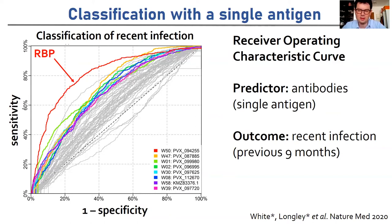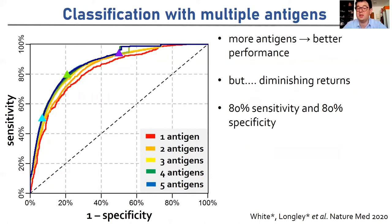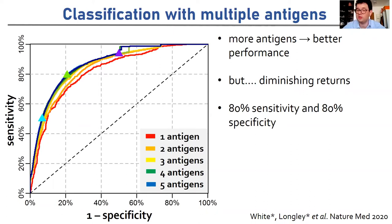The next question is: can we combine the signal from multiple antigens together to get better classification performance? The answer is yes. If we include more antigens, we can get better classification. With a combination of up to five antigens, we can get up to 80% sensitivity and specificity, though there's a real problem of diminishing returns. In essence, it uses a statistical method such as logistic regression or machine learning tools such as a random forest algorithm that takes continuous measurements of multiple antibody responses and outputs a yes or no answer.